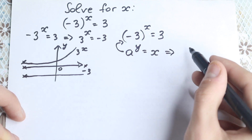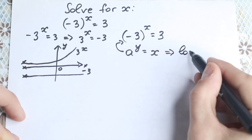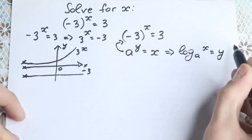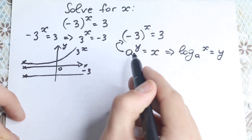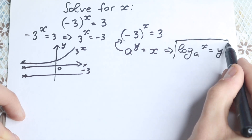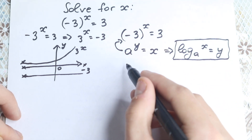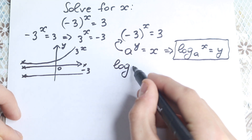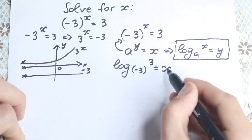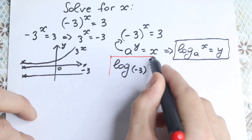We can easily rewrite this as a logarithm, using the main log rule: if a to the power y equals x, then log base a of x equals y. So according to this, we rewrite our expression as log base (minus 3) of 3 equals x. I hope you understand this step.